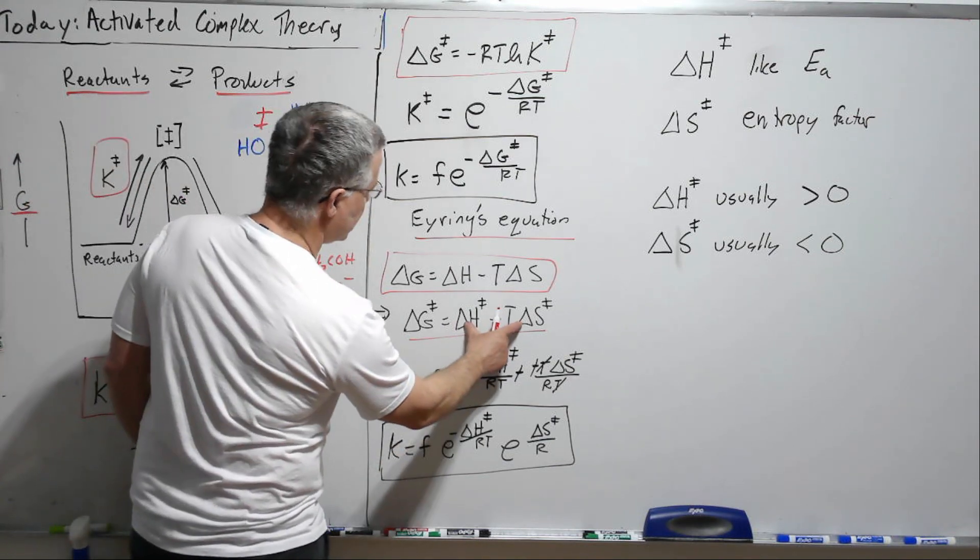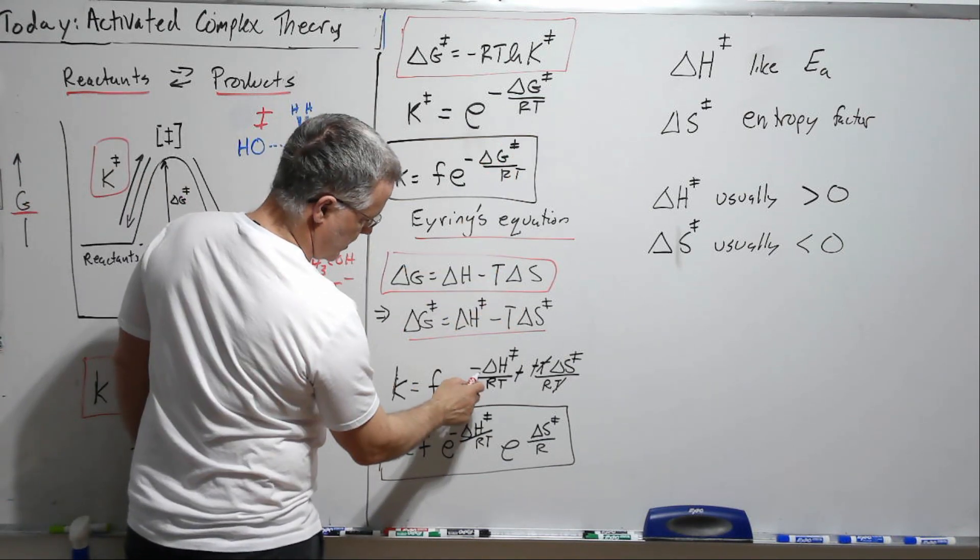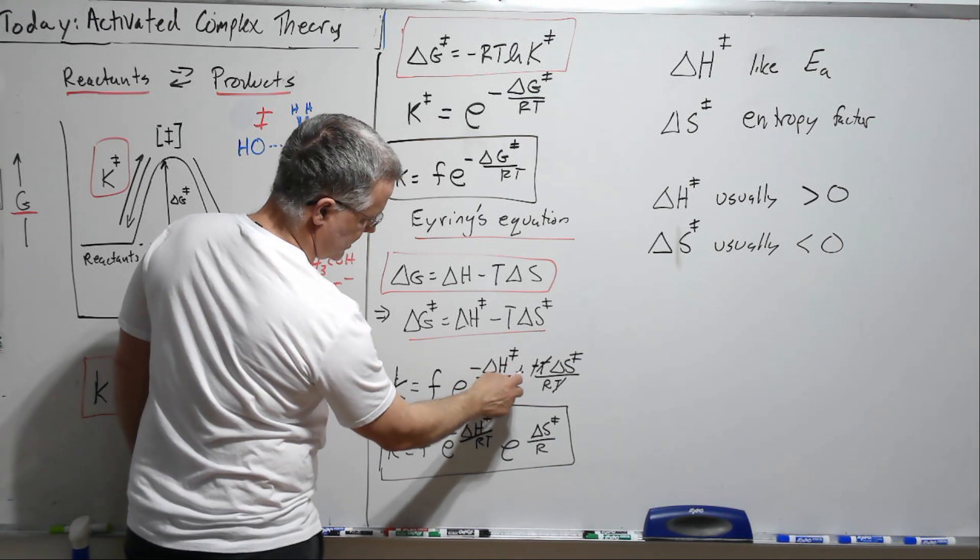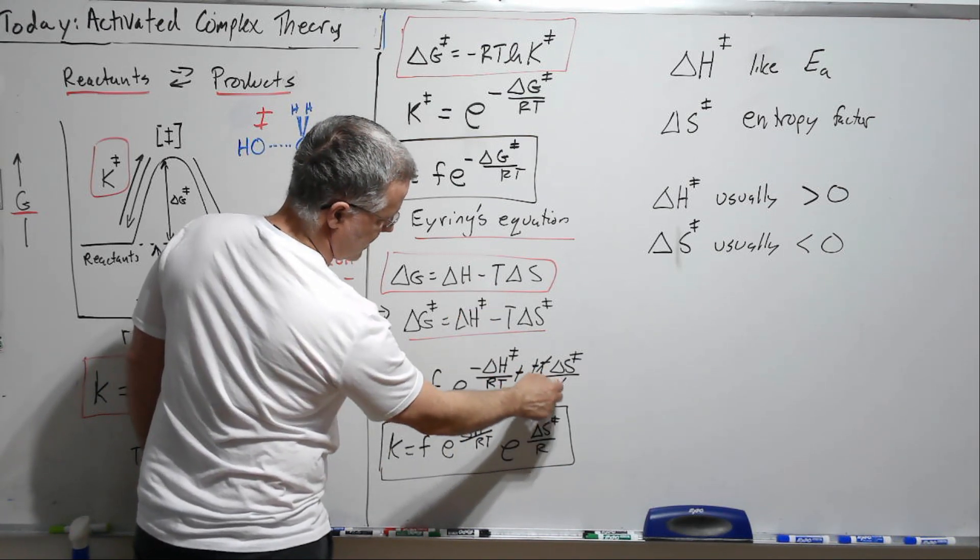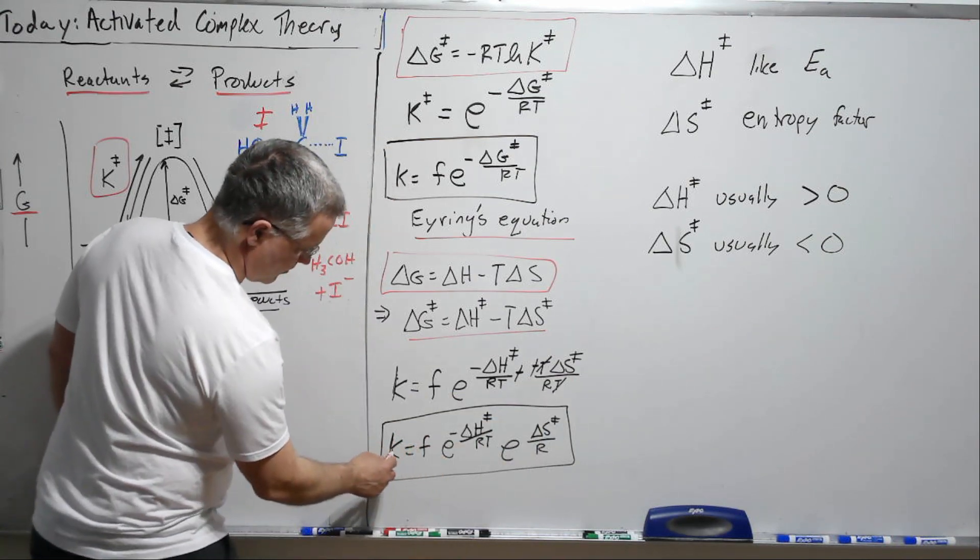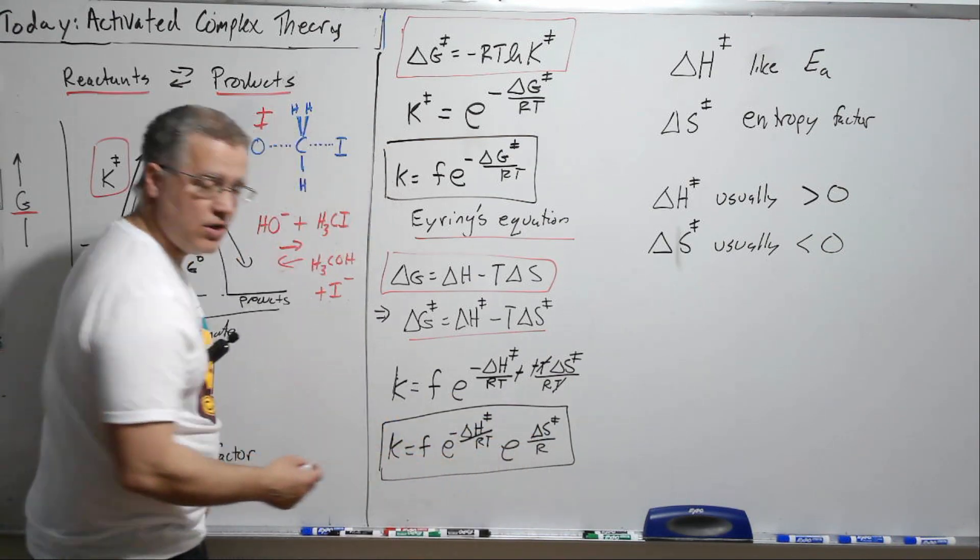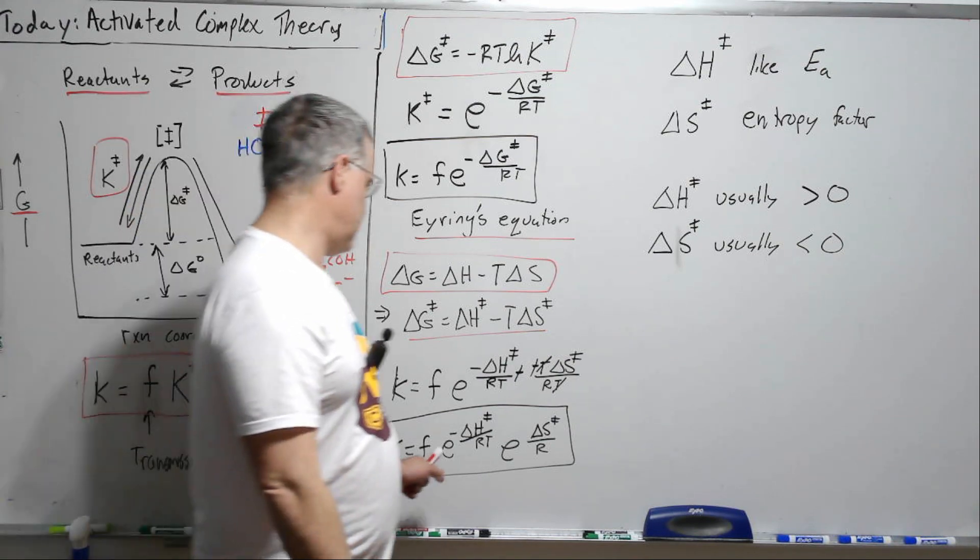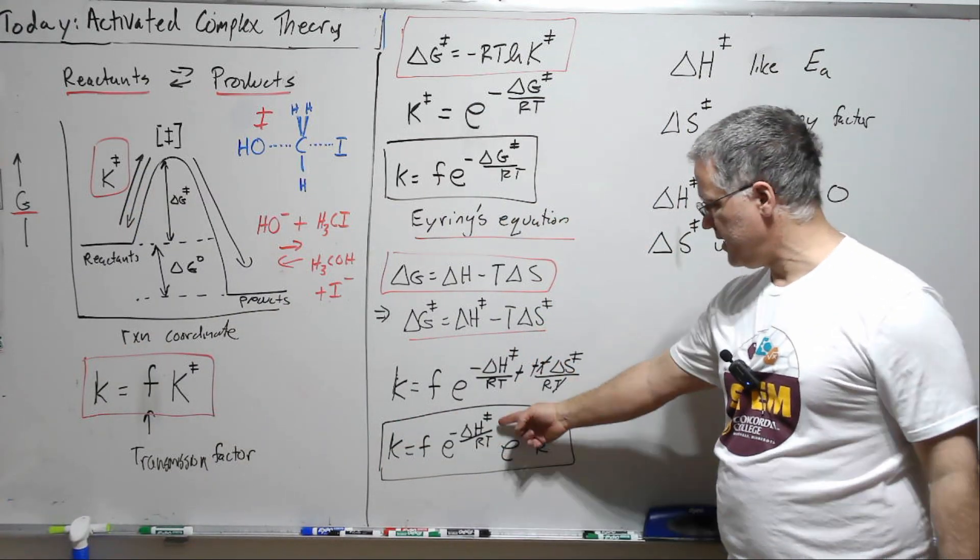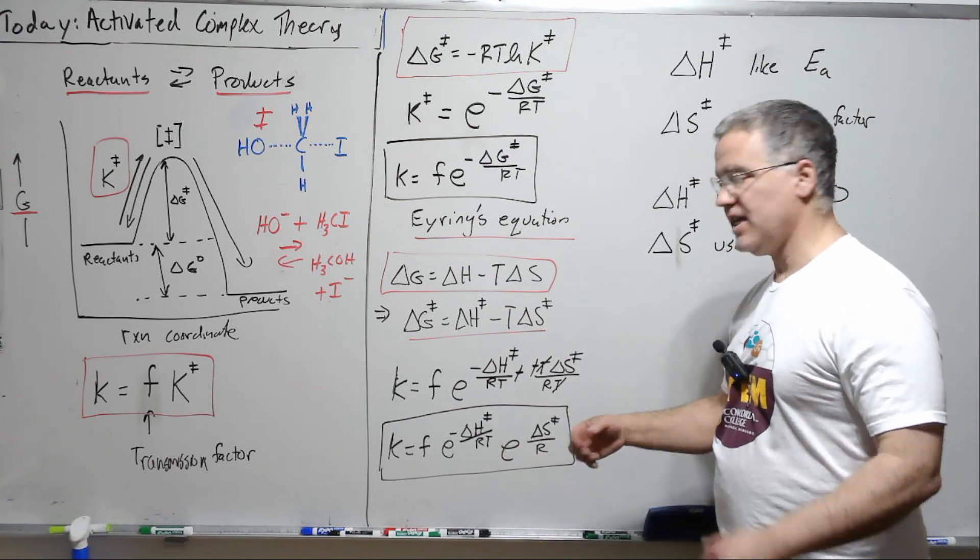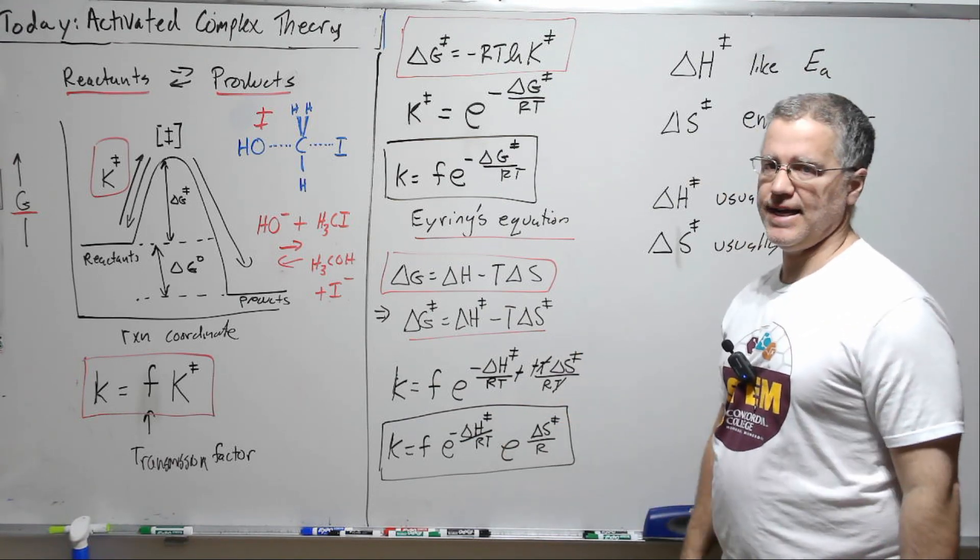So then we can plug this up into here. So we're going to get a minus delta H double dagger over RT minus a minus T delta S. So the minuses will cancel, the T's will cancel, and we'll be left with this. And so we'll often see the Eyring's equation written this way as well with the energy term, the enthalpy term here, and the entropy term right here separated out. So let's say a few things about that.